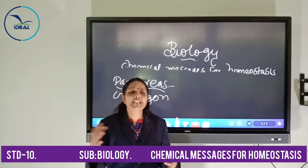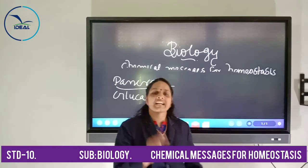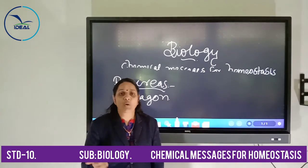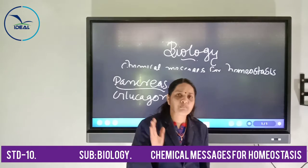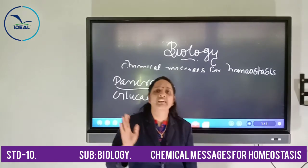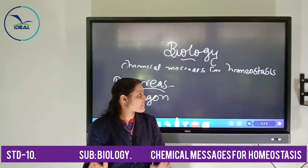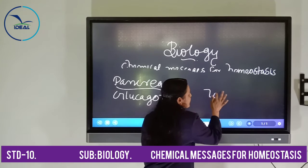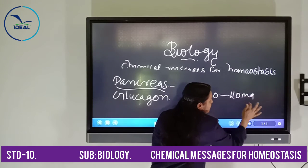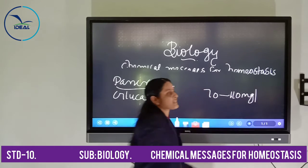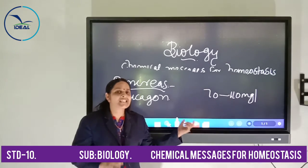So by the combined effort of both glucagon and insulin, the normal level of 70 to 110 milligrams per 100 ml of glucose is maintained in the human body.